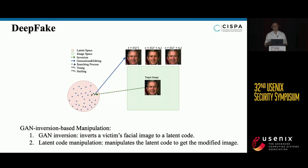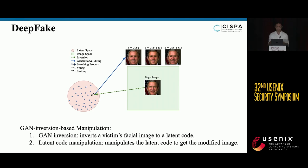There are various types of deepfake manipulation techniques. In this work, we focus on GAN inversion-based manipulation. Using GANs to manipulate facial images, the manipulator needs to perform a two-step operation: the first step is GAN inversion, which inverts a victim's facial image to a latent code; the second step is latent code manipulation, which manipulates the latent code to get the modified image, such as making the victim smile.